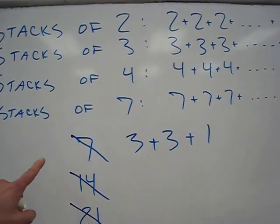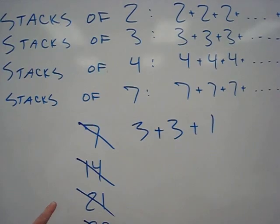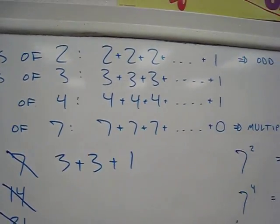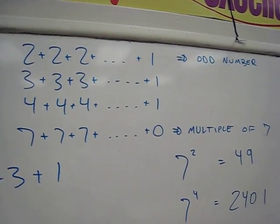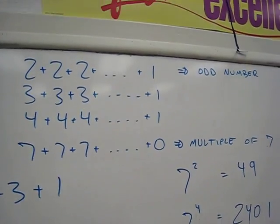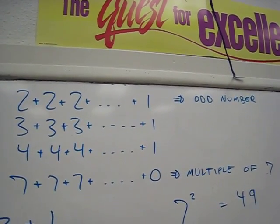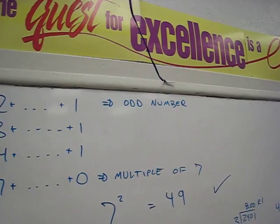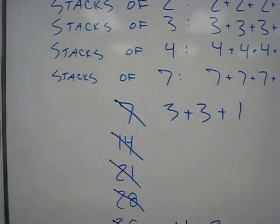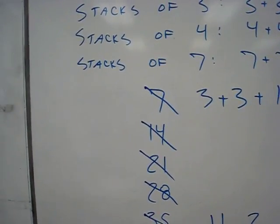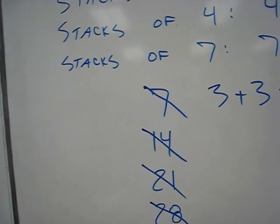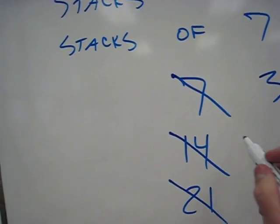We start listing out multiples of seven because we know that it's a multiple of seven because there's zero left over when I put out stacks of seven. And since there's one left over when I put out stacks of two, we know that it's an odd number. So I just went through and eliminated the ones that we know for sure are not the right ones. So obviously all even numbers are out.